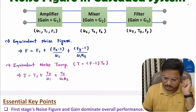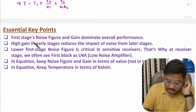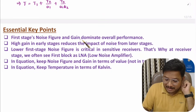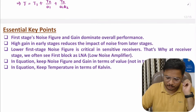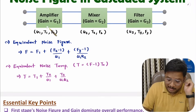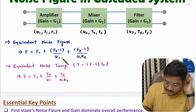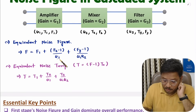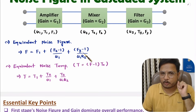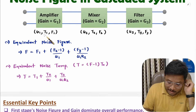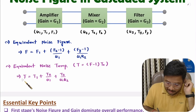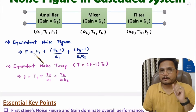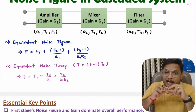Now let me discuss a few essential parameters. The first key point is that the first stage noise figure and gain dominate overall performance. If the first stage has a very high gain G1, then in the equation the effect of F2 and F3 is minimized because they are divided by G1. Conversely, if the first stage has a higher noise figure or noise temperature, the overall equivalent noise temperature and noise figure increase. So the first stage dominates the entire performance of the system.